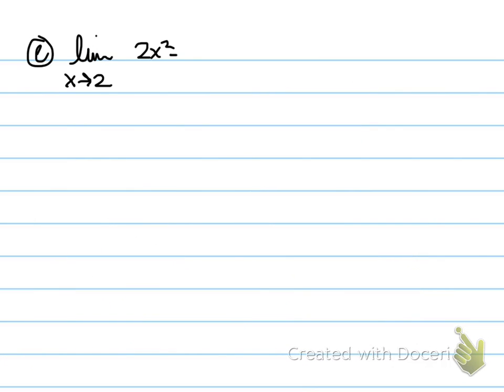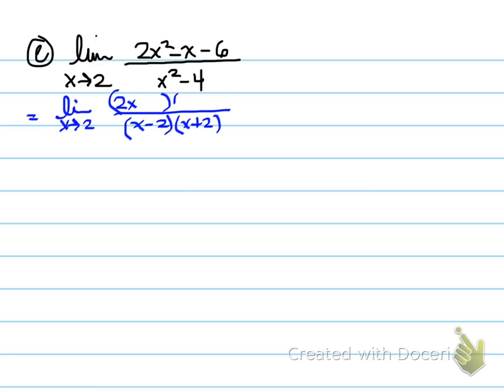All right. E. The limit as x approaches two of two x squared minus x minus six over x squared minus four. What you need to do here is factor. Factor the numerator. Common factor the denominator. And your result will be, now that x minus twos will cancel. So the limit as x approaches two of two x plus three over x plus two. So those x minus twos will actually cancel each other out. We plug in two now into the equation. So two will go in here, two will also go in here. And you end up with seven over four.